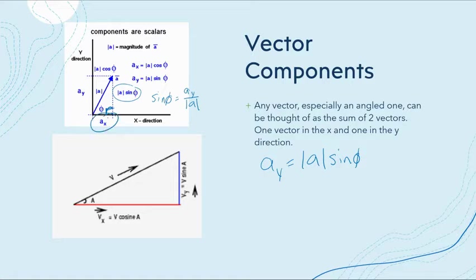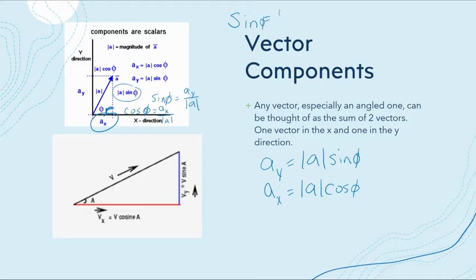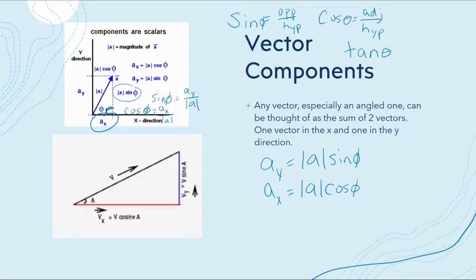We do the same for x: cosine θ equals adjacent over hypotenuse, so cosine θ equals a_x divided by a, meaning a_x = a · cosine θ. For those not 100% sure on trigonometry, remember SOH CAH TOA: sine equals opposite over hypotenuse, cosine equals adjacent over hypotenuse, tangent equals opposite over adjacent.